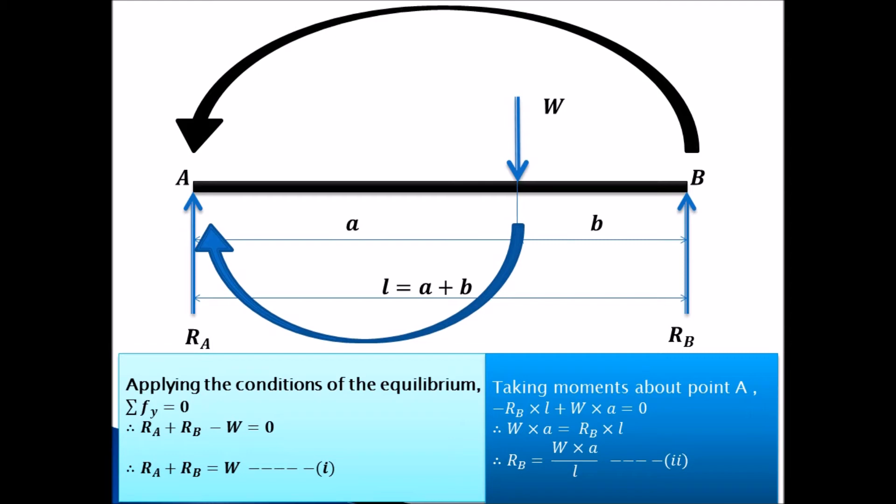So RB multiply by L. Force multiplied by the perpendicular distance, that is L, will be the moment of this RB about A. And that will be negative because this moment is anticlockwise. Similarly W, this is the force which is acting in the vertical direction. Perpendicular distance is small a about point A. And this moment is clockwise. So it is positive. So W multiplied by a is the positive moment.